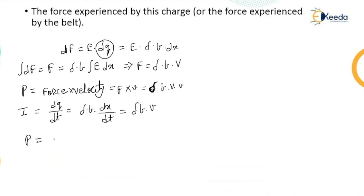Now, sigma B into v can be replaced by the current I, and therefore power is V multiplied by I. The power required which is written as F into small v, force into velocity, is nothing but the mechanical energy, and voltage into current is nothing but the electrical energy.